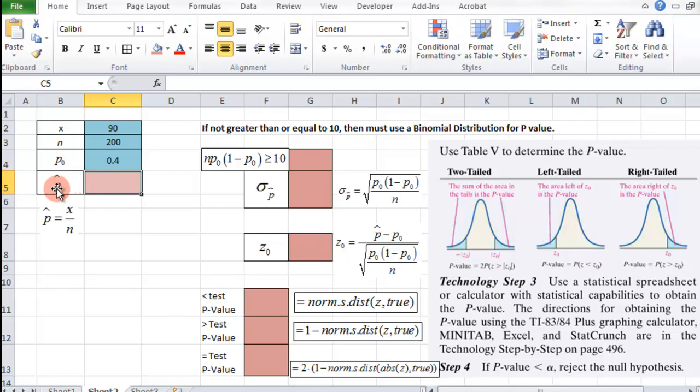Then we need the point estimate, or the p-hat, which is just the x value divided by the n value. So I'm going to make that a calculation, so that updates all the time.